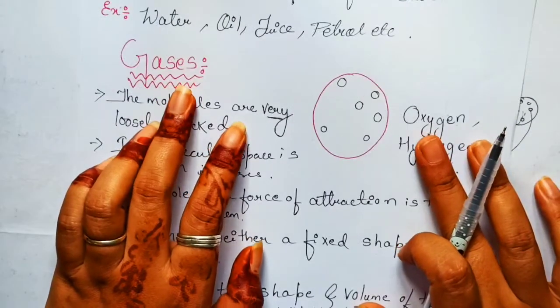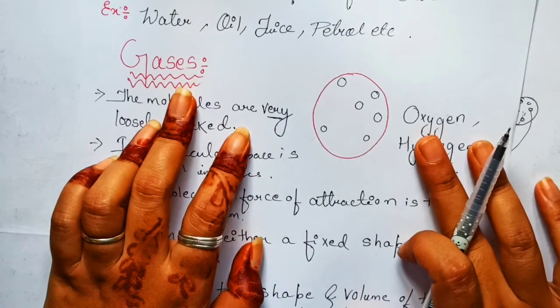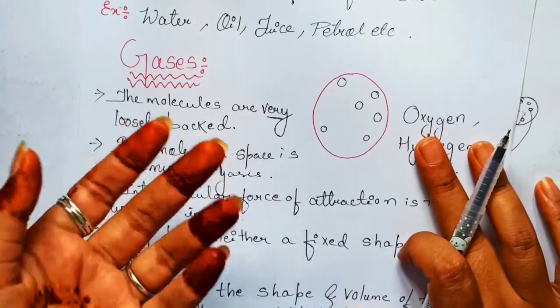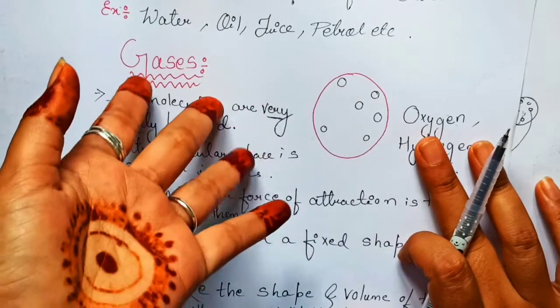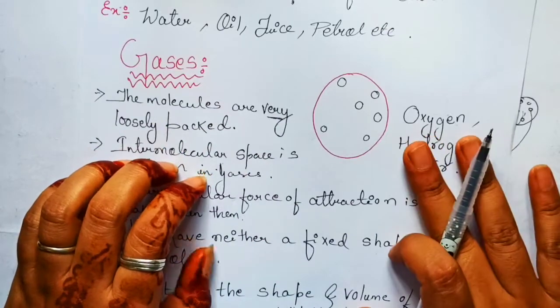When we talk about gases, we are talking about oxygen, hydrogen, air — they are all in the category of gases.